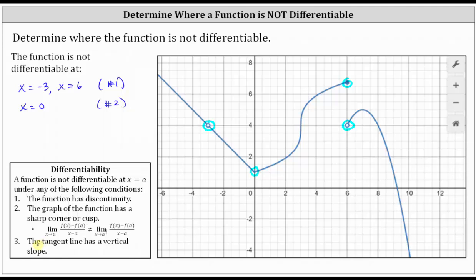And then finally, number three, the tangent line has a vertical slope. We're going back to our function. Notice at x equals three at this point here, the tangent line would be a vertical line. And since a vertical slope is undefined, the function is not differentiable at x equals three. And this is because of condition number three.